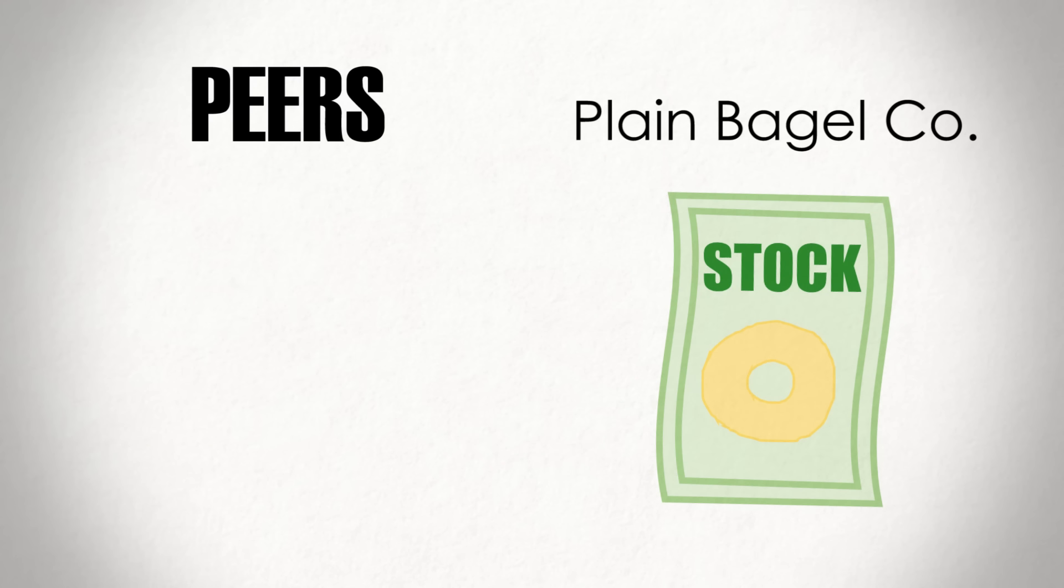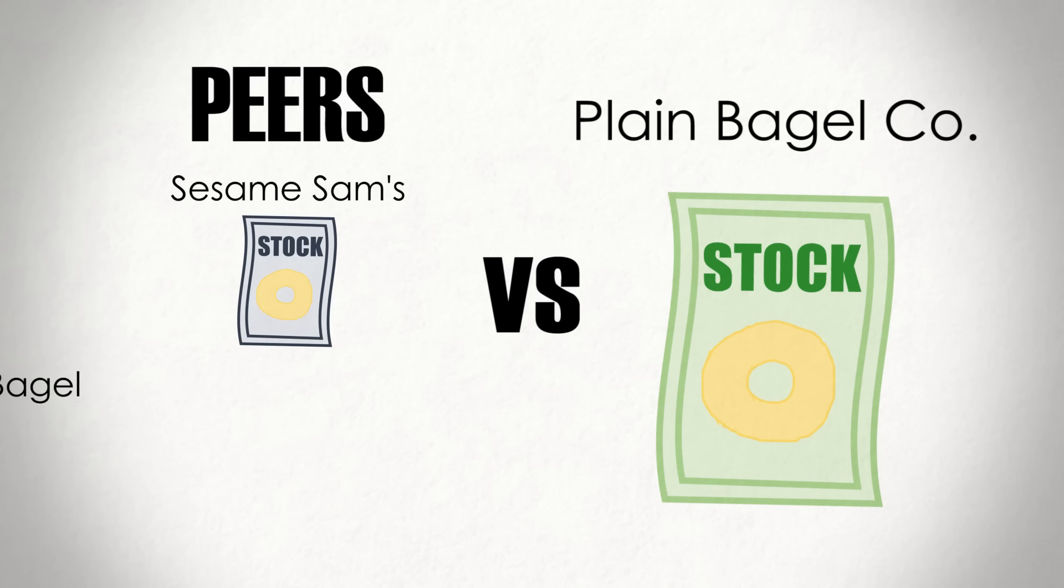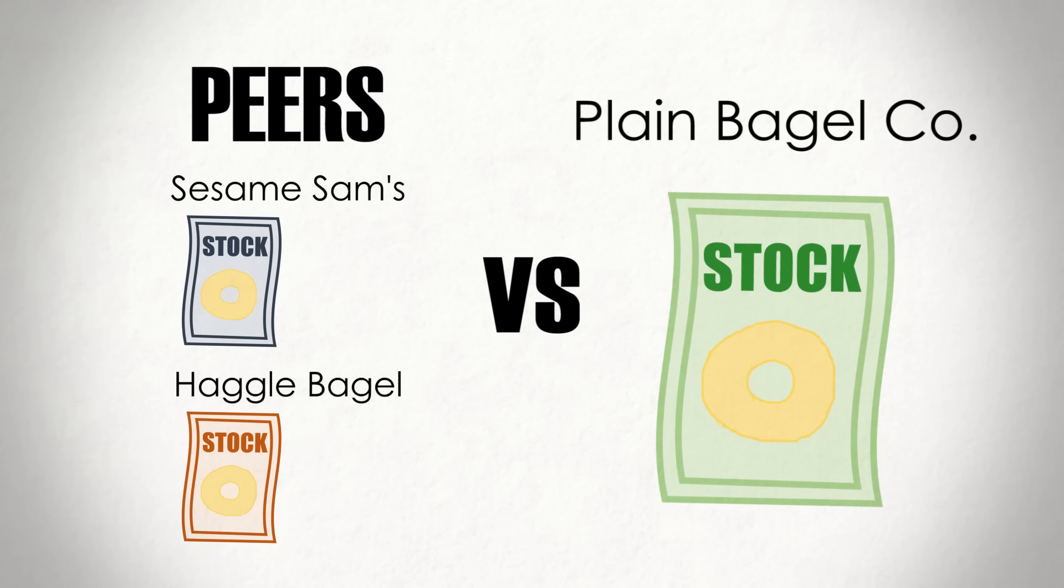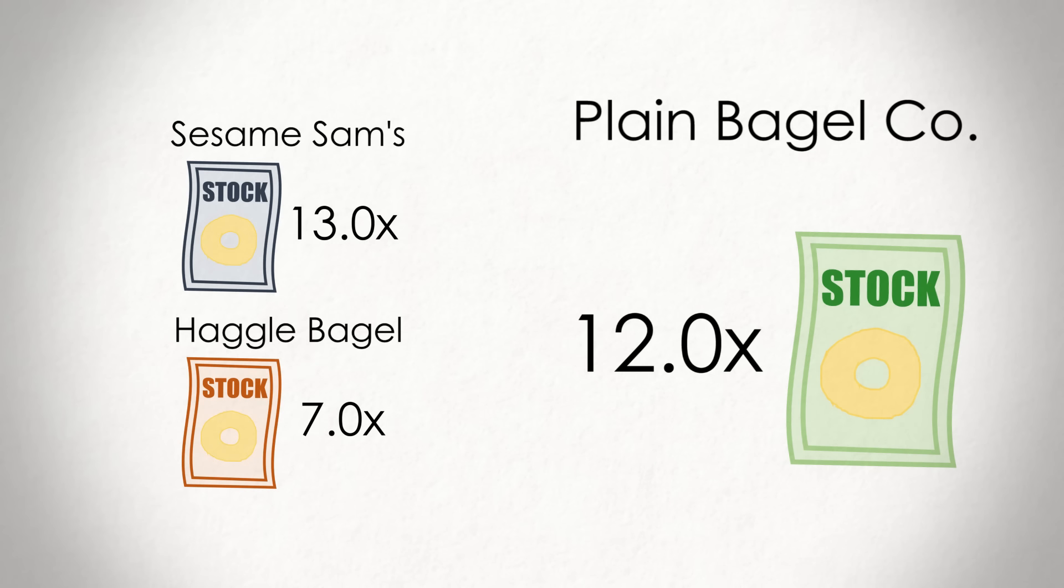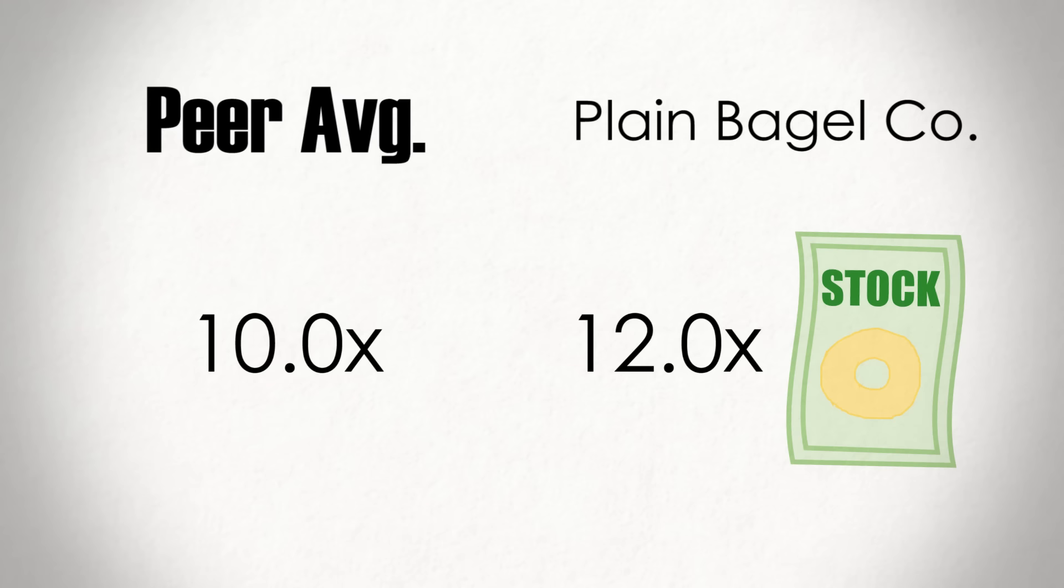So let's take Plain Bagel Co. and compare it to Sesame Sam's and the Haggle Bagel, which are trading at forward PEs of 13 times and seven times, respectively. If you compare Plain Bagel Co.'s 12 times multiple to its peer average of 10 times, well, then we can see that the stock is actually more expensive than other bagel companies on average. Alright, so the stock is cheaper than it normally is, but more expensive than its peers, so should I buy or sell or what?